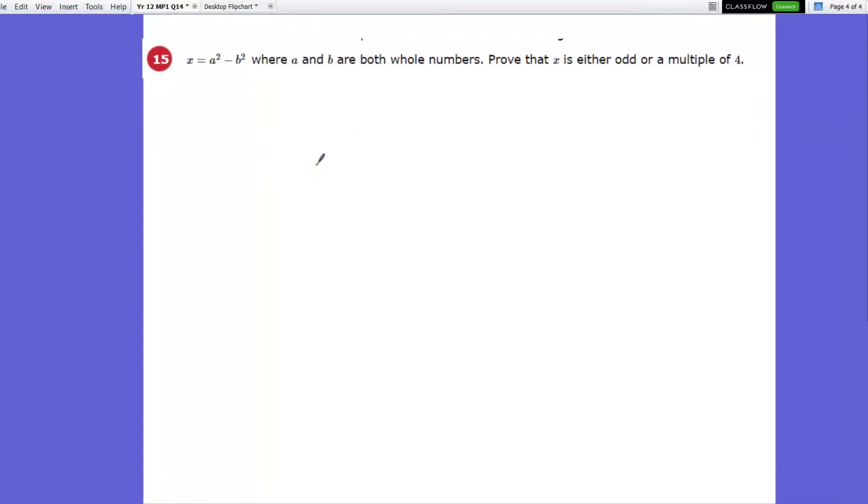Hi team, Mr. Retour here. We're doing proofs, chapter 1. This is mixed practice 1, question 15. So let's have a quick read. X equals a squared minus b squared, where a and b are both whole numbers. Prove that x is either odd or a multiple of 4.